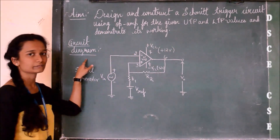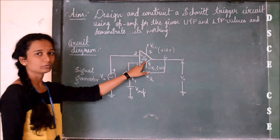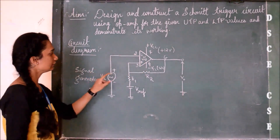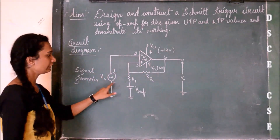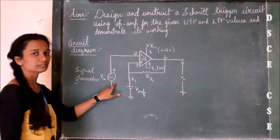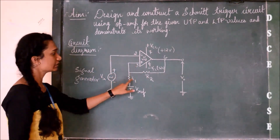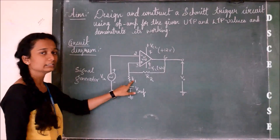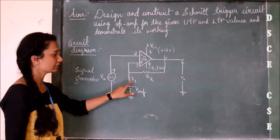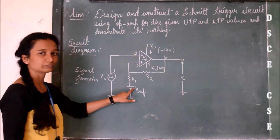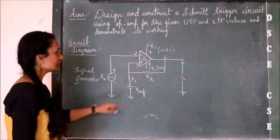The circuit diagram is as follows. We use an IC 741. Pin number 2 is connected to the positive of the signal generator and the negative of the signal generator is grounded. From pin number 3, resistor R1 is connected and the other end of R1 is connected to the positive of the battery, and the negative of the battery is grounded.